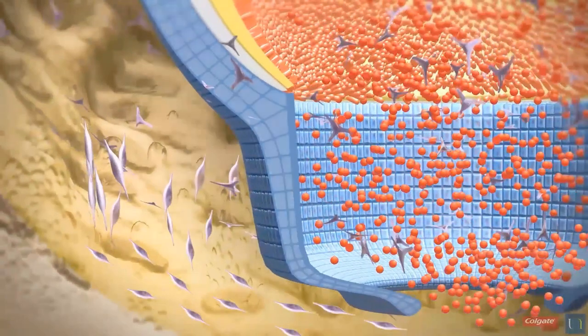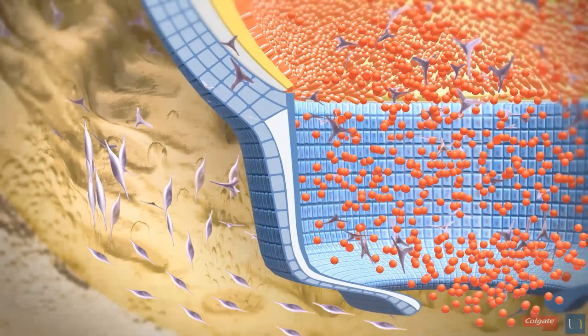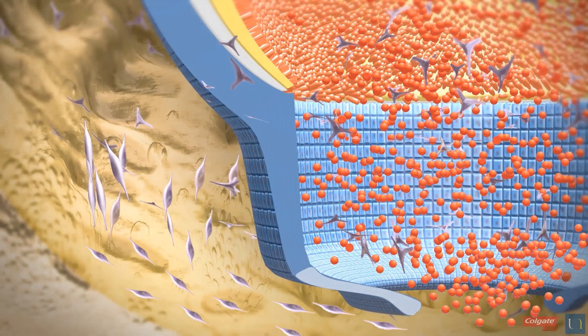Hertwig's epithelial root sheath is a bilayered cellular structure composed of an inner epithelial layer facing the dental papilla and an outer epithelial layer facing the dental follicle. The apical bent portion of the sheath is named epithelial diaphragm. Its role is to induce the radicular dentinogenesis.